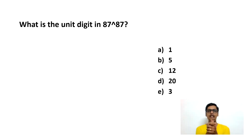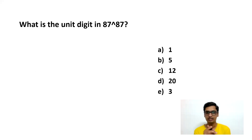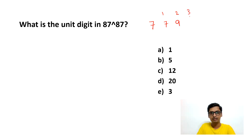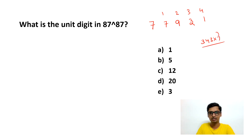Here you have the first question: What is the unit digit in 87 power 87? This question is based on cyclicity. What is the cyclicity? If you take 7, so 7 power 1 — the last digit is 7. 7 squared is 49, so last digit is 9. 7 cubed is 343, so last digit is 3. 7 power 4 — the last digit will be 1, because 343 into 7: 7 into 3 is 21, so last digit is 1.